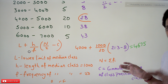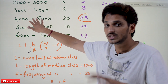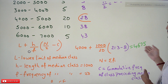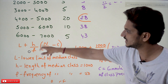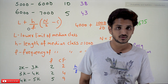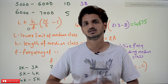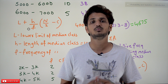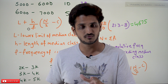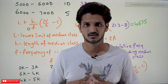So this is how we calculate the median value when continuous frequency distribution is given, and when discrete frequency values are given. Hope you understand the concept. If you have any questions, please post them in the comment section below. Thanks for watching. If you haven't subscribed to our channel, please subscribe and press the bell icon for the latest updates. Thank you.